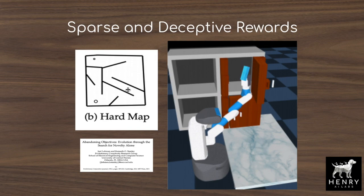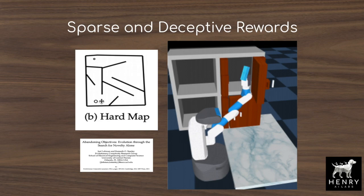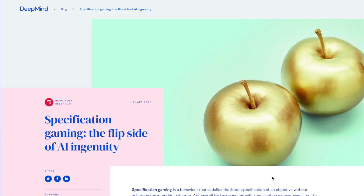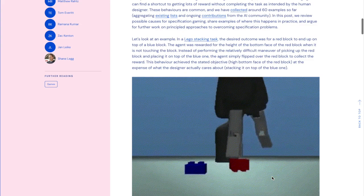The maze navigation example combines sparse and deceptive rewards. The agent only gets a reward for reaching the finish line. One way to overcome this is a heuristic reward like the L1 distance between the agent and the finish line. But as it traverses, it minimizes L1 distance and gets trapped — a deceptive local optima. Exploration then has a hard time finding novel states to get the real path to the finish line. Manual reward engineering is also difficult because of specification gaming and reward hacking.